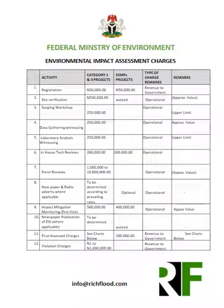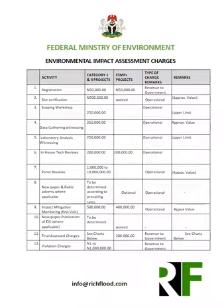After the site verification exercise comes the scoping workshop, where the scope of the study, the stakeholders to be consulted, and how the study is going to be planned and to what extent it will go are all determined. This is an operational fee of 250,000 Naira paid to the Federal Ministry of Environment. This is an upper limit and is used for transportation, logistics, and lodging — that is why it is called operational.